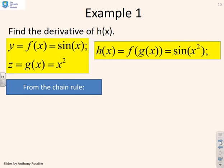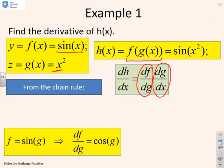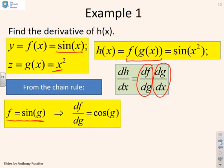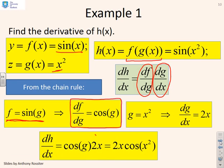Here's a simple example. Find the derivative of h(x) equals f(g(x)), where f(x) equals sine x and g(x) equals x squared. From the chain rule, dh/dx equals (df/dg) times (dg/dx). Since f is sine g, df/dg equals cos g. Since g is x squared, dg/dx equals 2x. Therefore dh/dx equals cos g times 2x. Substituting back g equals x squared gives the answer: 2x cos(x squared).